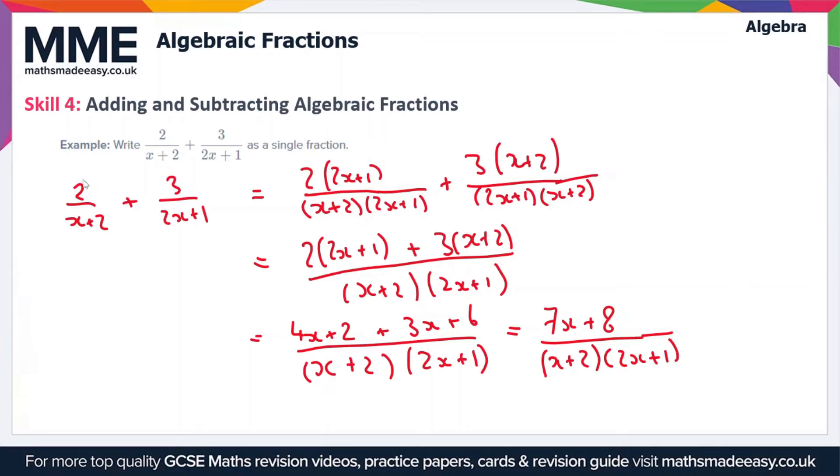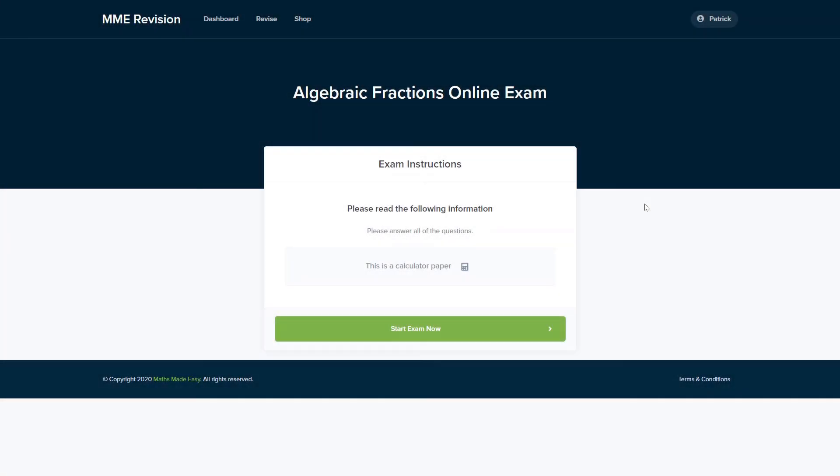So if we just recap the steps here, we get a common denominator by multiplying the numerator and the denominator of each fraction by the opposite denominator. That's what we did in this first step. Then we just expanded the brackets that we were left with, so we ended up with 4x plus 2 plus 3x plus 6 when we expanded the brackets on the numerator, and then we just collected like terms in this last step to get 7x plus 8 over x plus 2 times 2x plus 1.